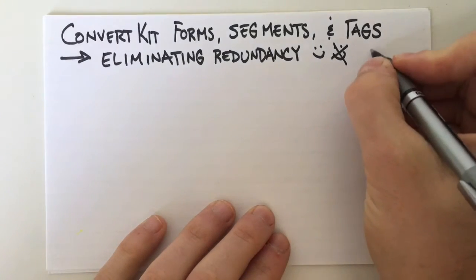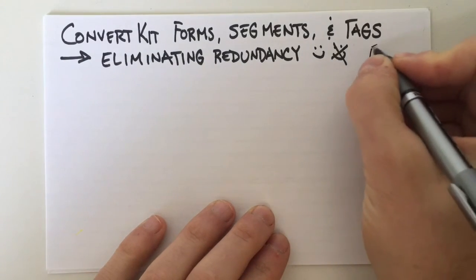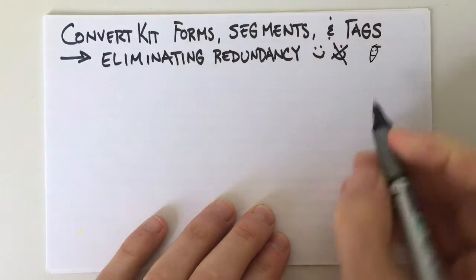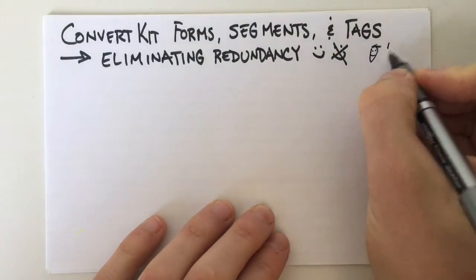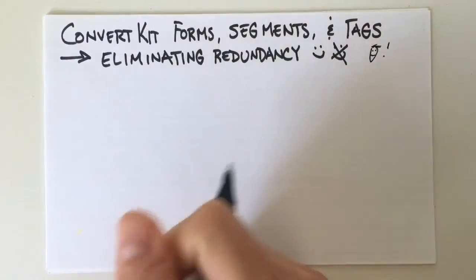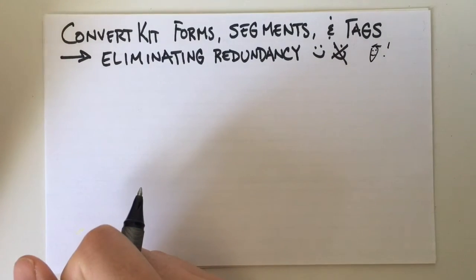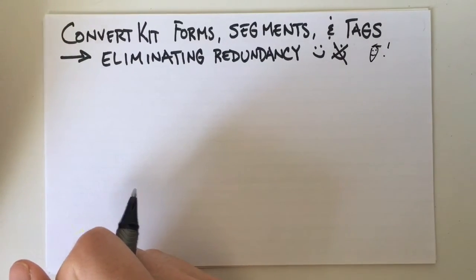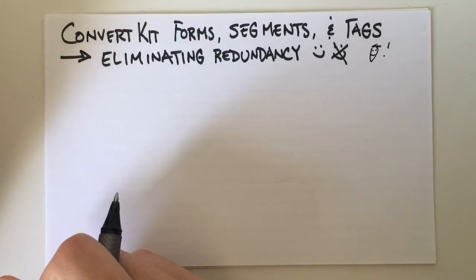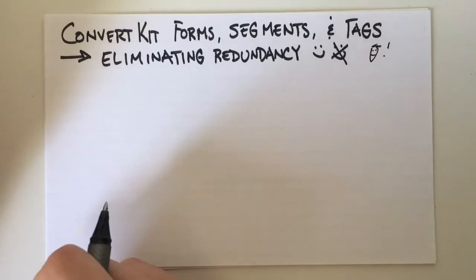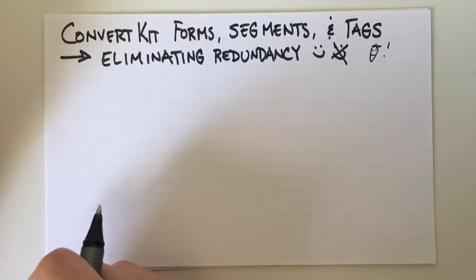Hey everyone, this is Matt with ConvertKit. Hope you're doing well today. I wanted to make this quick video to tell you about something that I see happen a lot with new ConvertKit customers — understanding the difference between forms, segments, tags, and especially eliminating redundancy where you don't need to have that.